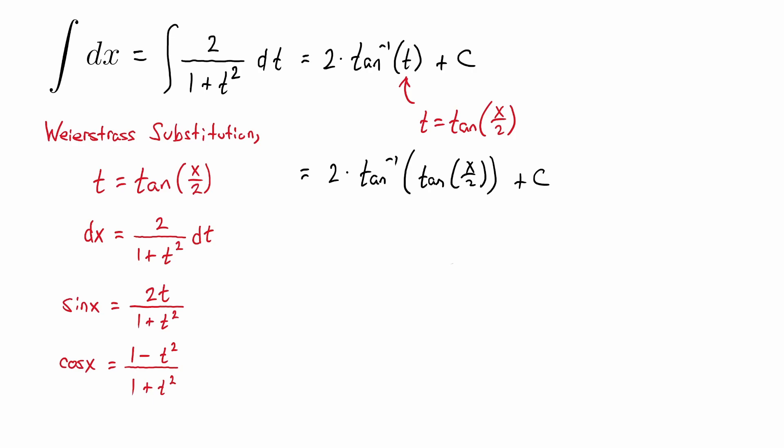And we're going to recognize we have a function inside its inverse function, which cancels out. So we get 2 times the inside there, which is x over 2.